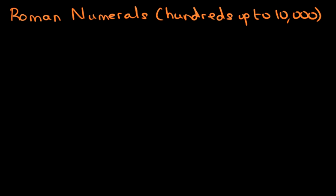First we're going to go through some of the letters we've come across before. Starting with one hundred — that is C. The next one, five hundred — that is D. The next one is one thousand — that is a capital M. So those are the ones we've come across before.